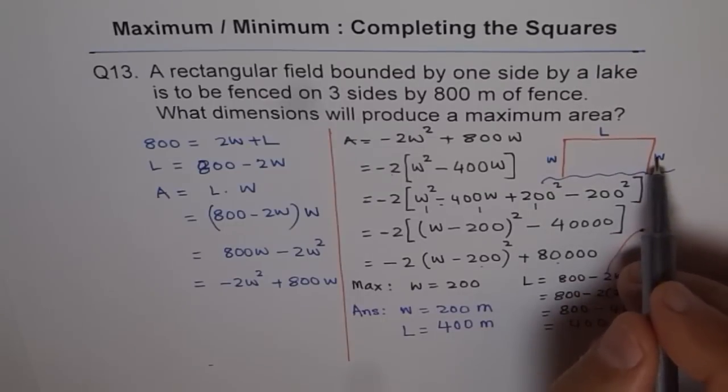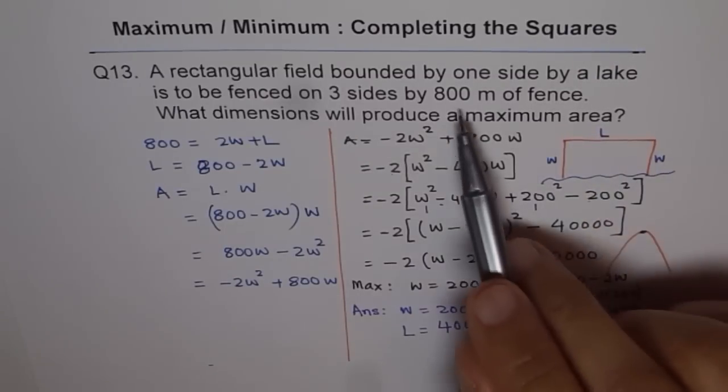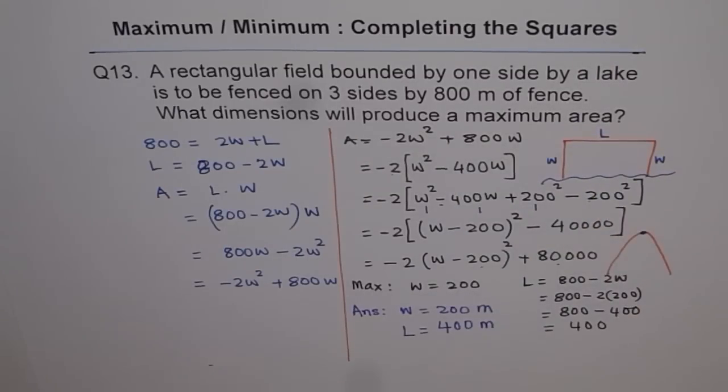So 200 plus 200 is 400. 400 plus 400 is 800. 800 meters of fencing. So that is how you get your answer using completing the squares method.